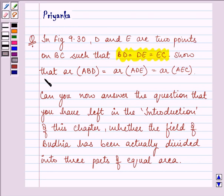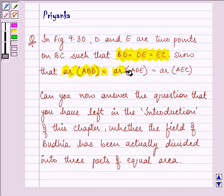We need to show that area of triangle ABD is equal to area of triangle ADE is equal to area of triangle AEC.